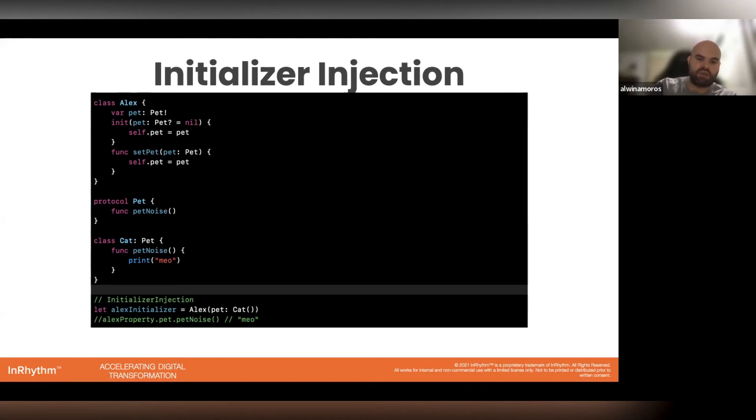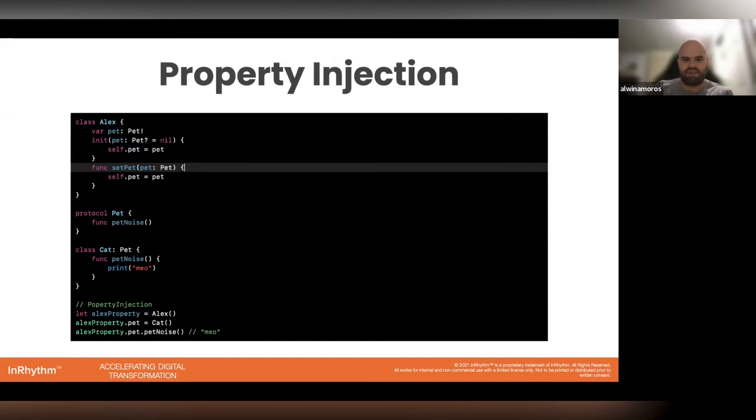So the first one we have is to pass them through the initializer. Once you do so, you can call pet noise and it would print out meow. The next one that I have, wait, I actually missed two others.